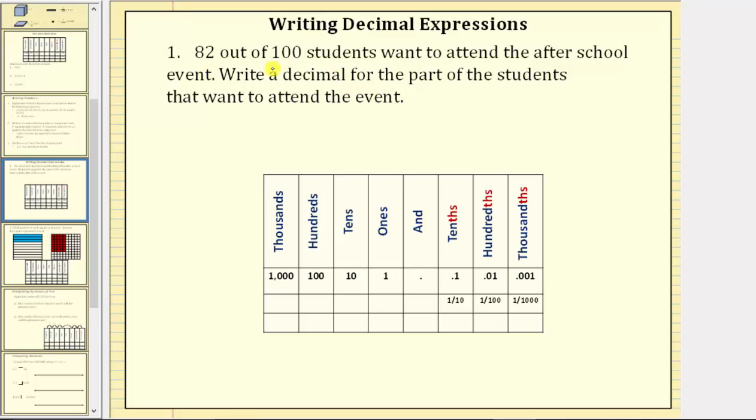Because 82 out of 100 students want to attend as a fraction, this is 82 hundredths, but the question is asking for a decimal, not a fraction. So let's review the place value chart below.